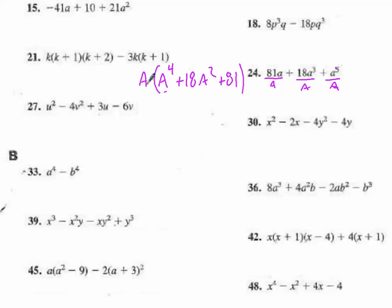Now it's time to factor again. 81 is a perfect square, and a to the fourth is a perfect square. There's a good chance this is a perfect square binomial because the outside terms are both perfect squares — if the square root of 81 times 2 equals my middle term. The square root of 81 is 9; 9 times 2 is 18. So it's a perfect square binomial: a squared plus 9, squared. If we had a squared minus 9 we could factor again as a difference of squares, but it's not, so we won't. And that's the right answer.